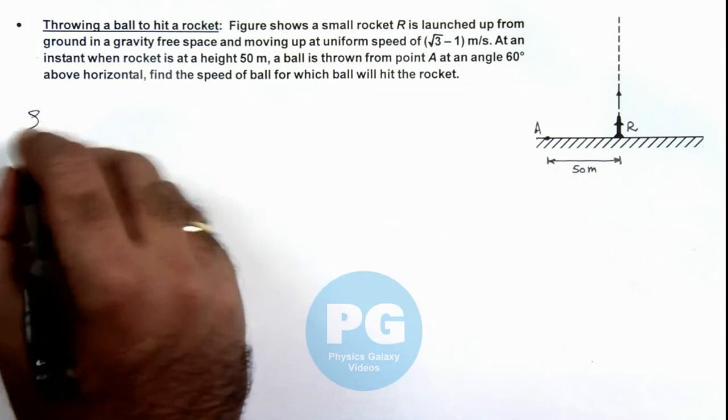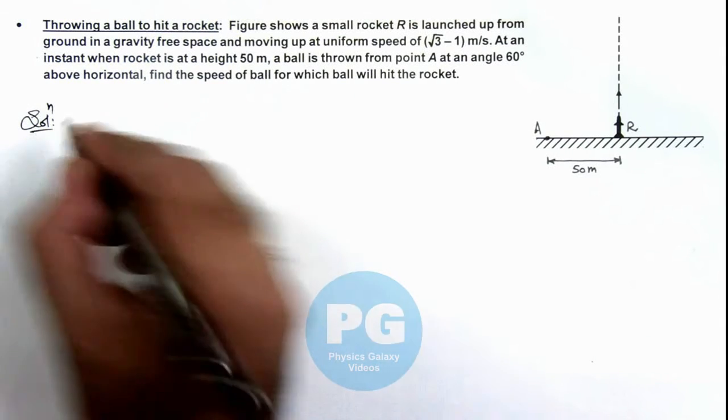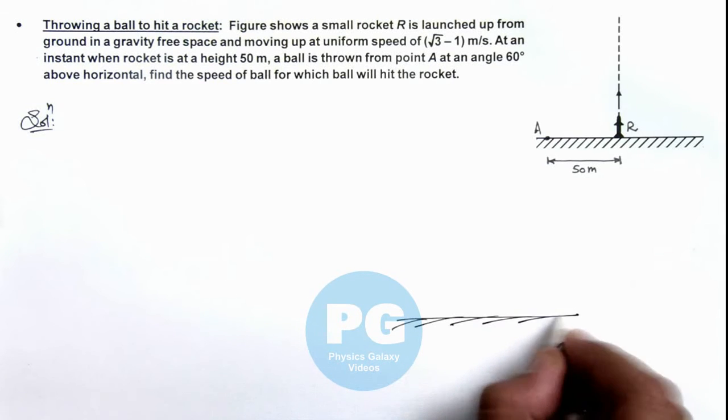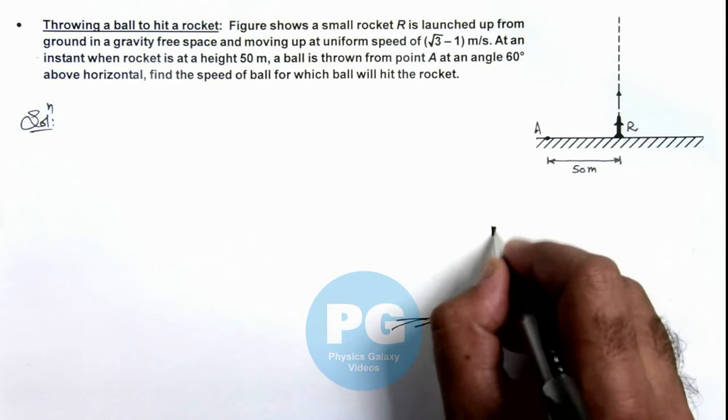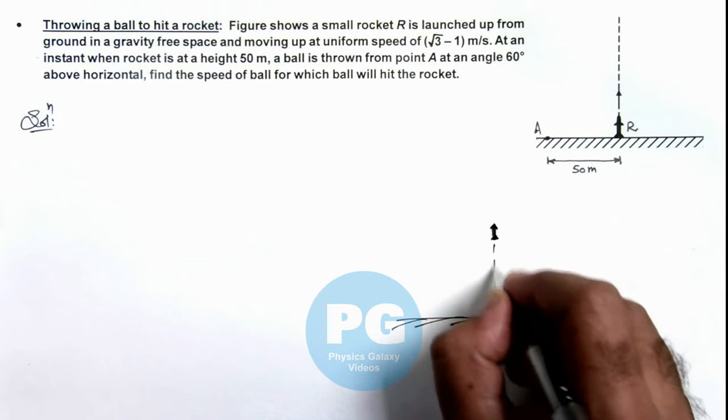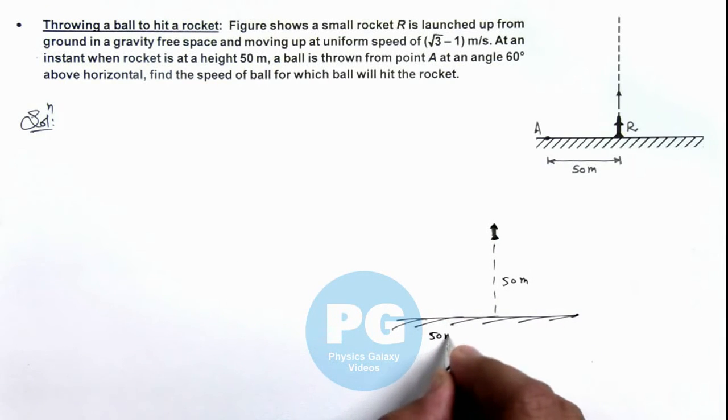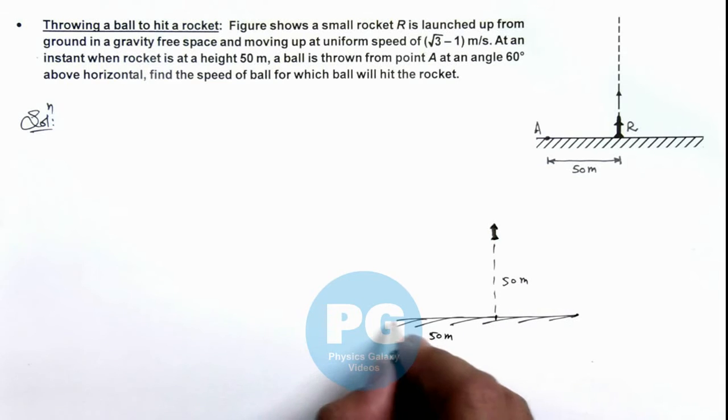Now in this situation, we can redraw the case when the rocket is going up and the rocket is located at a height of 50 meters which is given to us, and at a distance of 50 meters from the starting launch point of rocket there is a point A.